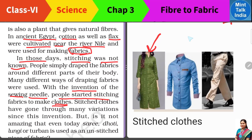जैसे आजकल हम कट करके कुर्ता बनाते हैं, shirt बनाते हैं, pant बनाते हैं — these are the examples of stitched pieces of fabric, stitched cloth, जिसे needle की मदद से सिलाई करके बनाया जाता है। अब सिलाई करने के दो तरीके हैं — people use hand stitching also and people use machine stitching also.